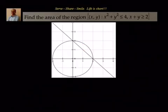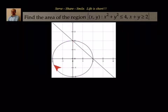Welcome friends. As part of applications of integration, areas of bounded regions, let's look at this example. We have to find the area of the region where x² + y² ≤ 4 and x + y ≥ 2. To solve the problem, we first understand that x² + y² = 4 is a circle with center at (0,0) and radius 2. And x + y = 2 is a straight line passing through the points (2,0) and (0,2).